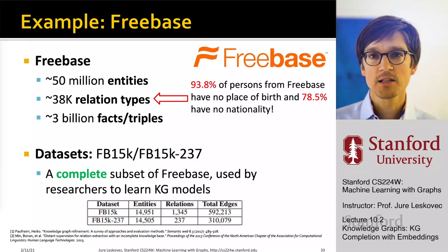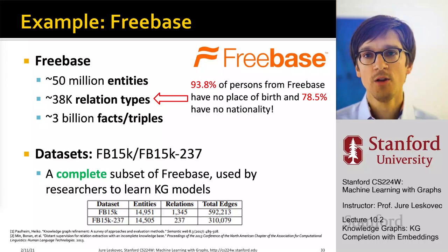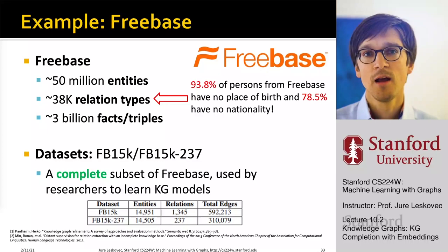The question then is: can we automatically infer the nationality of a given node, or infer where a given person was born? This is what is called knowledge graph completion.